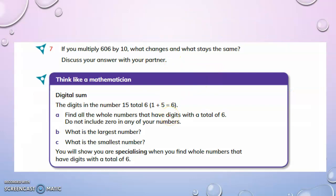Now, if you multiply six hundred and six by ten, what changes and what stays the same? Discuss your answer with your partner. When we multiply a number by ten, the digits shift one place to the left. So the digits remain the same, but the value of each digit changes — this shift is equal to multiplying by ten.